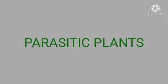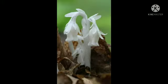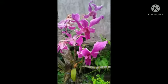Some plants do not make food. They obtain their food from dead or decaying plants. Indian pipe and some orchids are examples of these kinds of plants.